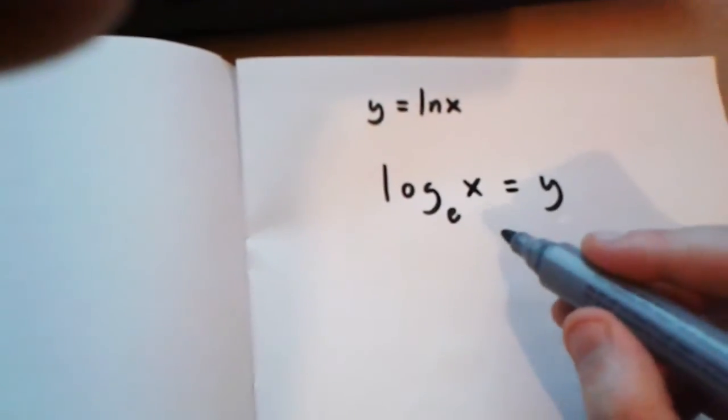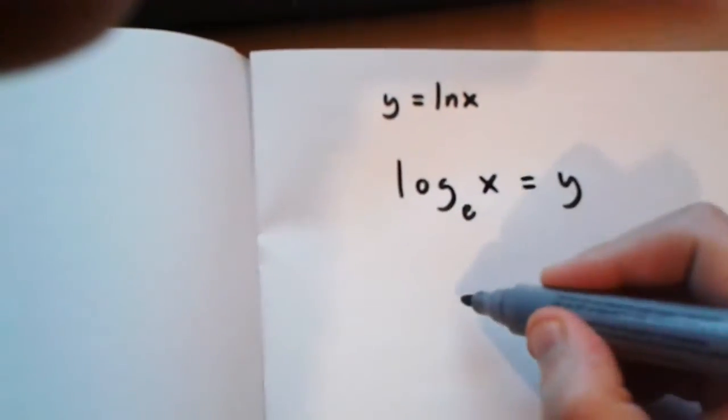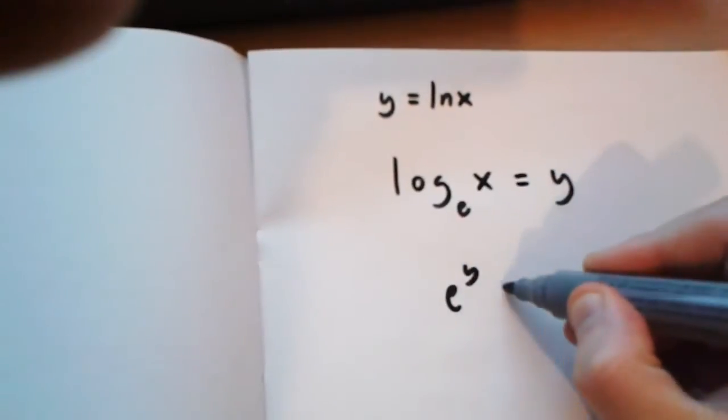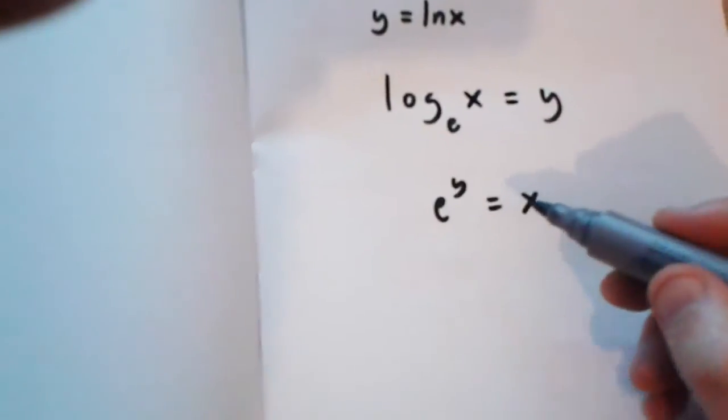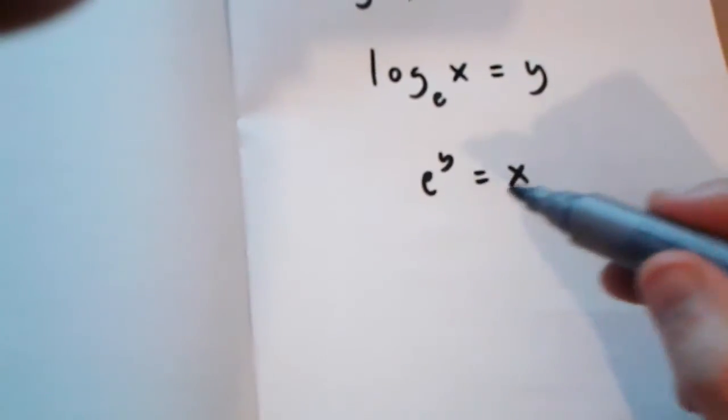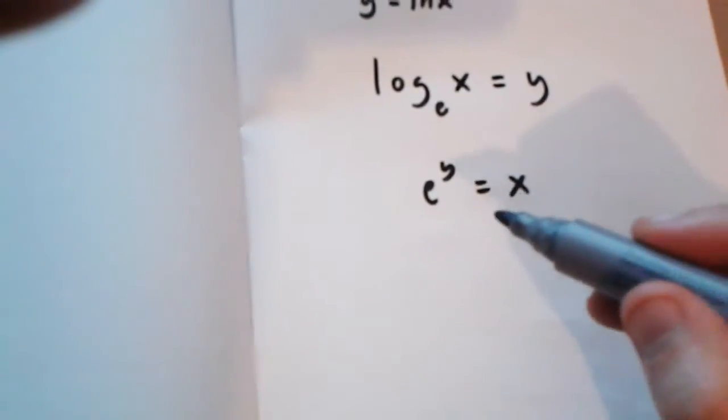Now, from here you should know that e to the power of y is x. Now, what you do from here is implicit differentiation.